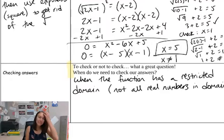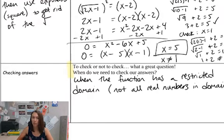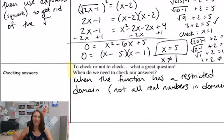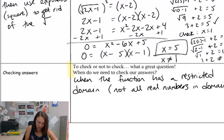This takes a little more in-depth knowledge of each type of function. Polynomial functions — x² functions, x³ functions, x⁴ functions, linear functions — all those polynomials have all-real-number domains. So as long as you didn't do something wrong in your math, you don't have to check your answers for polynomials because you're never going to have extraneous solutions.